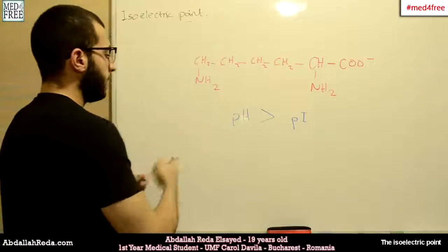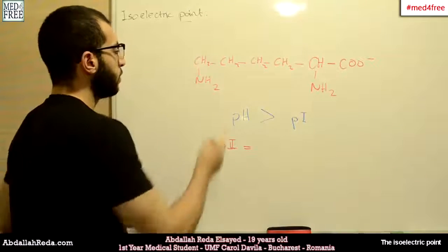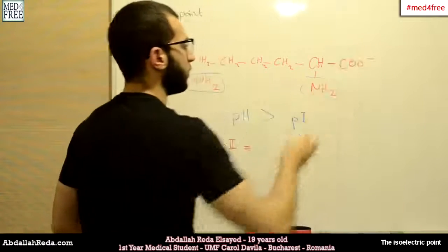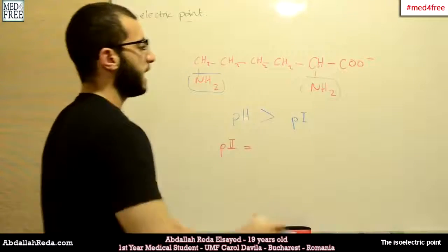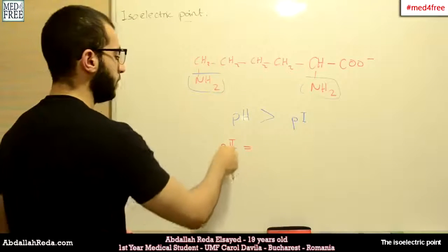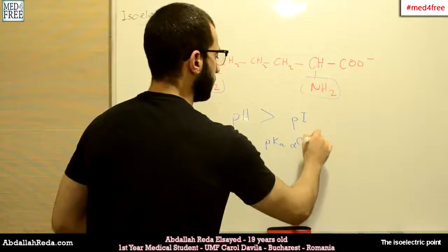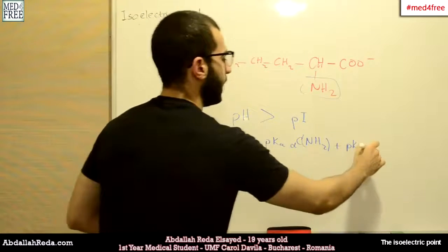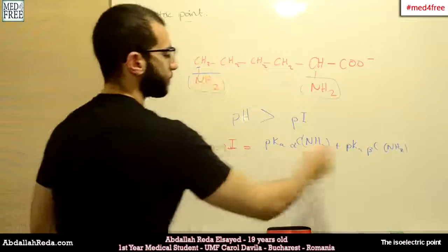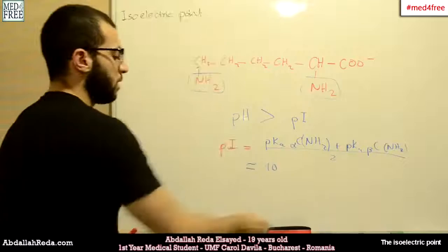The PI of this type of amino acid — when we have two groups of the same type — is calculated without considering the other type of group as an effector. So the PI equals the PKA of the alpha carbon amino group plus the PKA of the beta carbon amino group, divided by 2, which gives us a number around 10.